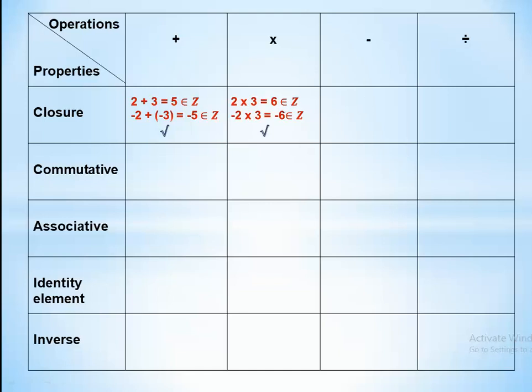In subtraction: 2 minus 3 equals negative 1, and negative 2 minus negative 3 equals positive 1 — both belong to Z, so closure also exists in subtraction. In division: 6 divided by 3 equals 2, which belongs to Z, but 3 divided by 6 equals 0.5, and fractions and decimals do not belong to Z.